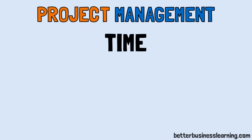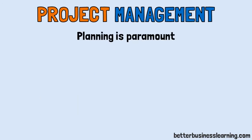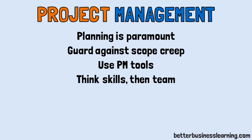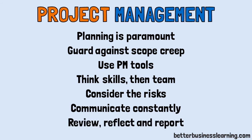To summarise: to make sure your project is completed on time, on budget, meeting its scope and in a quality manner, remember that planning is paramount. Fiercely guard against scope creep by getting solid agreement on the required deliverables. Make sure you know about and use available project management tools. Think about the skills your project needs before building your team. Think hard about what risks your project could face. Communicate like an orchestral conductor during implementation. And don't forget — review, reflect and report on your project successes and shortcomings so your team learns from the experience.